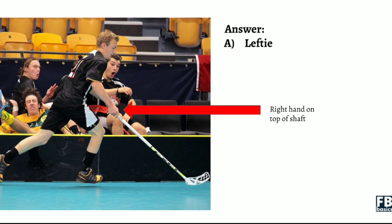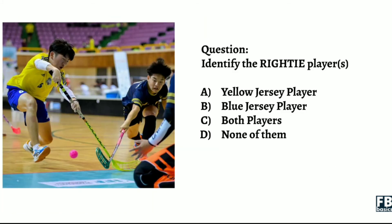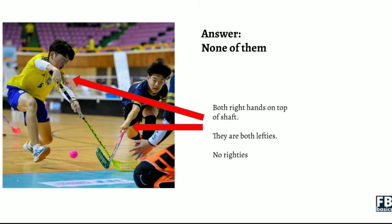Next question. In this picture, identify the righty players. Now, none of them is actually a righty player. Why? Because based on observation, both players' right hands are actually on top of the shaft. And so, therefore, they are both lefties, and none of them are actually righties.